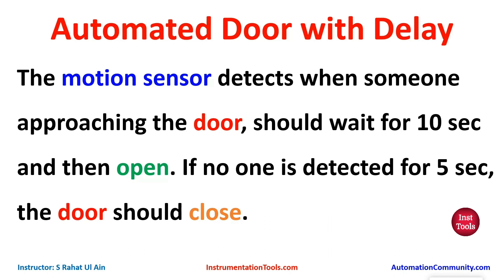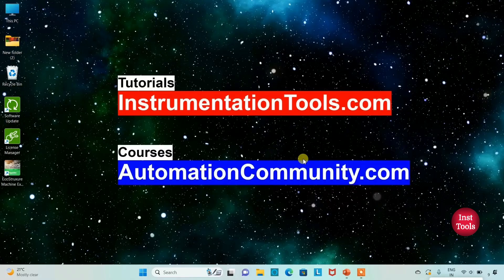Now let's move to EcoStructure Machine Expert where we will draw a ladder diagram for the automated door with delay. We will use some normally open contacts and timers like the pulse timer and on-delay timer.